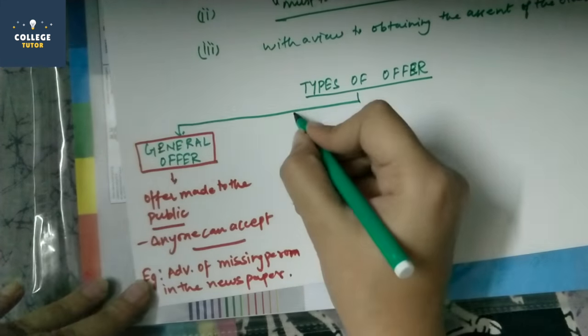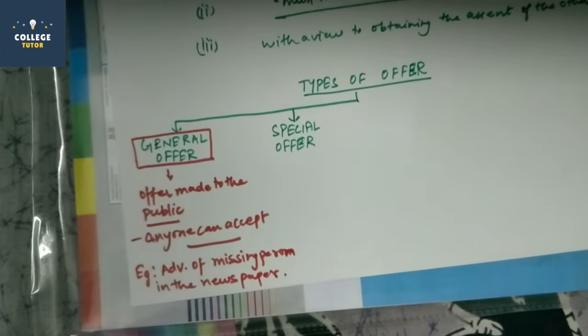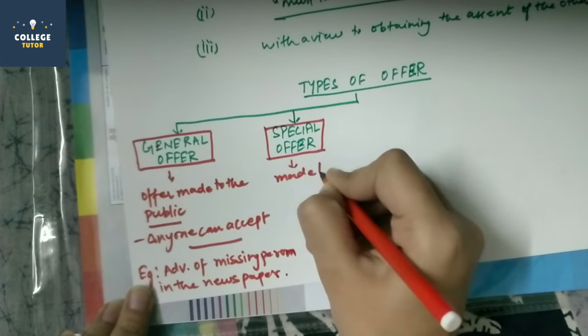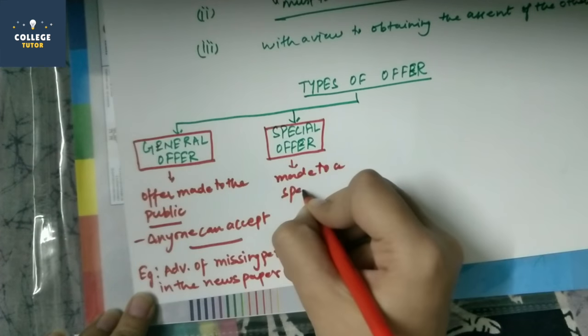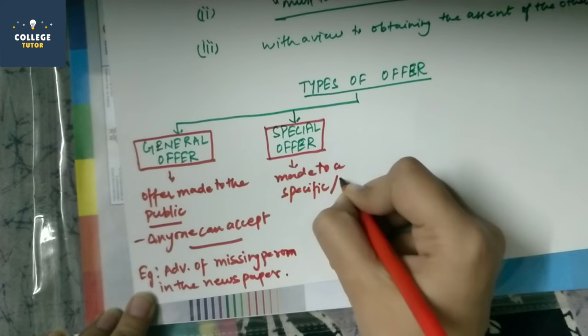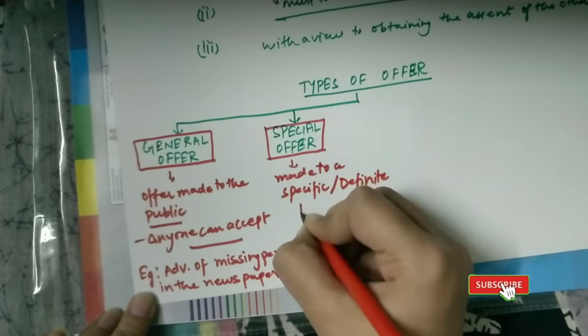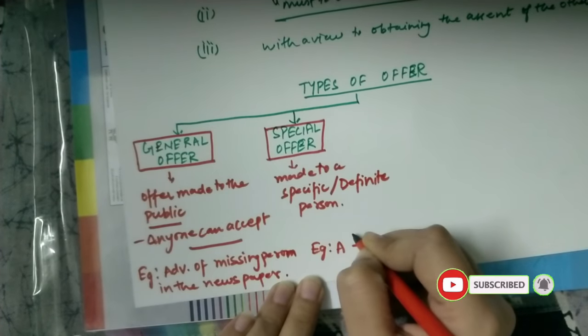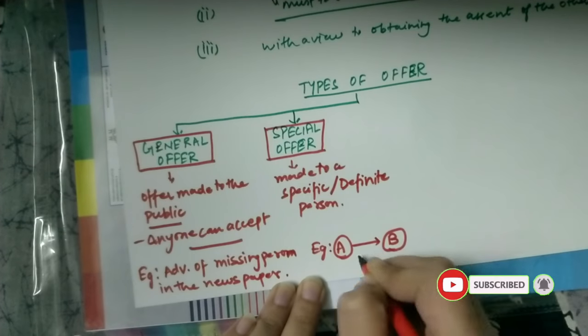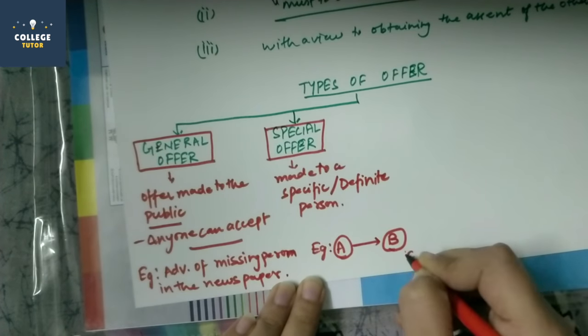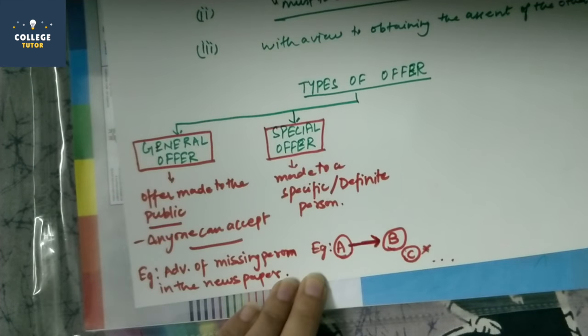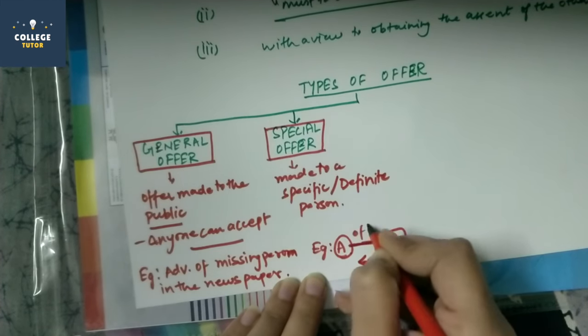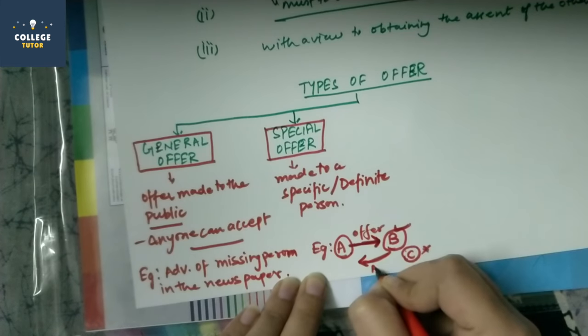Second type of offer is special offer. As the name suggests, special offer, it is made to some specific person, made to a specific or we can say definite person. A is offering to B that he will buy his wristwatch. So A is only offering to B. He is not offering to C or anyone else. And only B can accept it. If A is only offering to B, then only B can accept that offer.